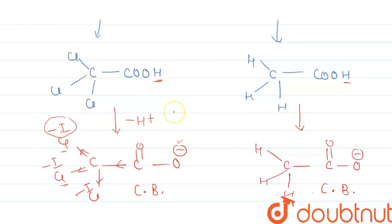And here, no such minus I effect is seen in the case of hydrogen. So due to the minus I effect of chlorine, trichloroacetic acid is more stable than acetic acid.